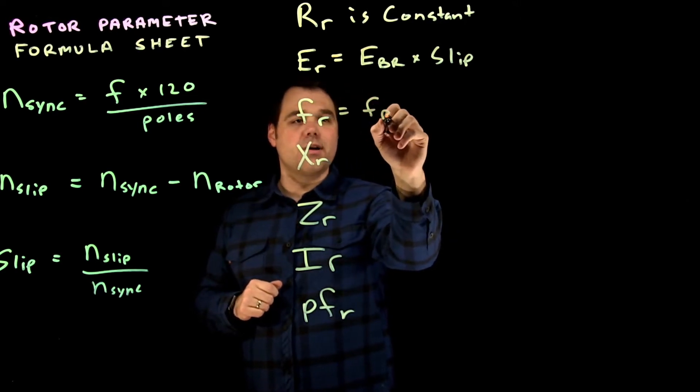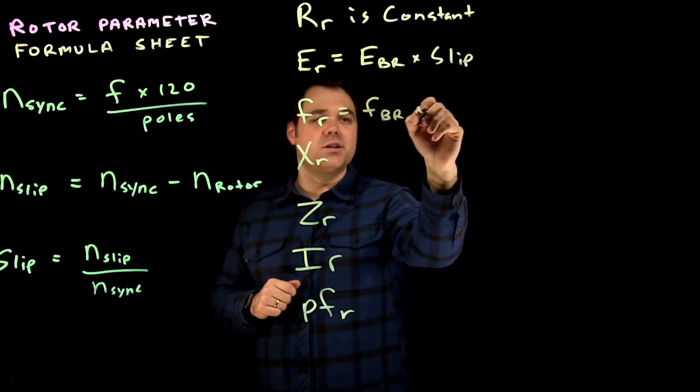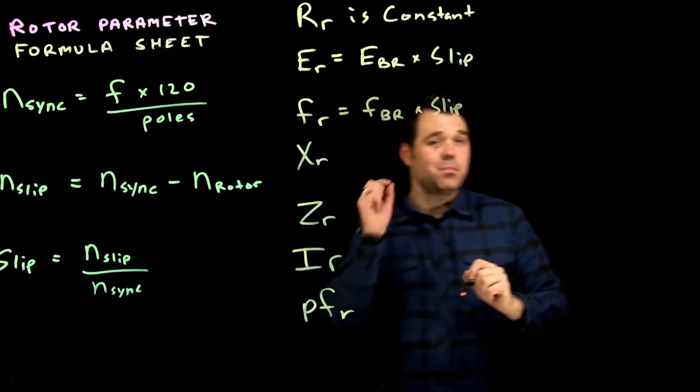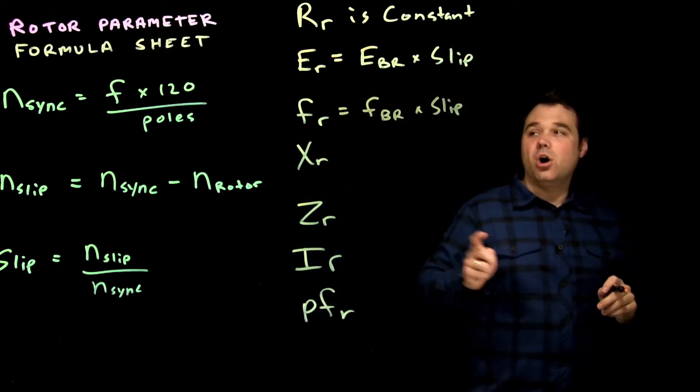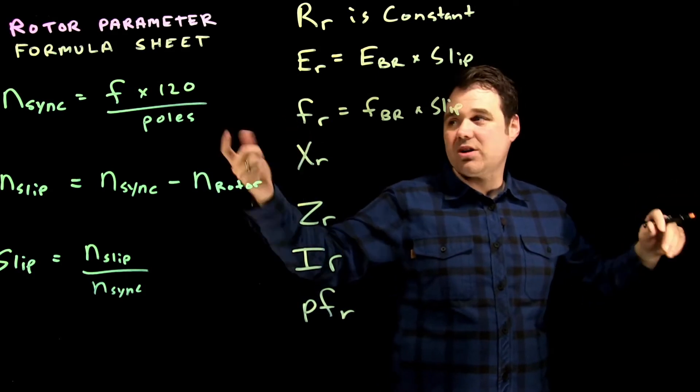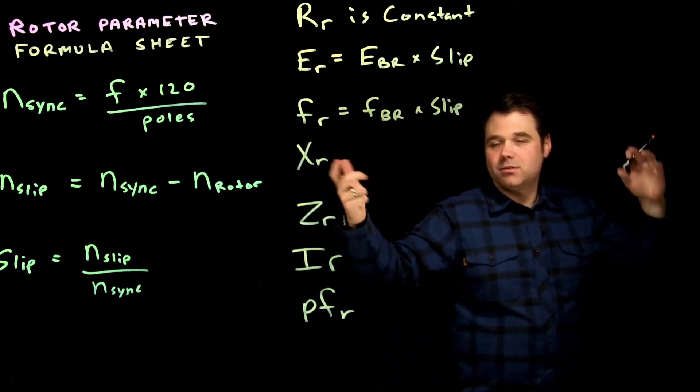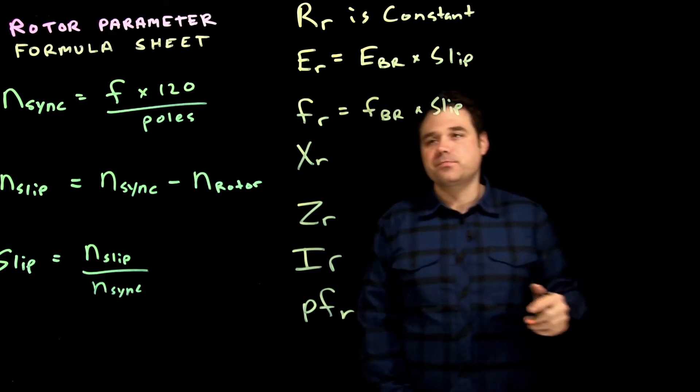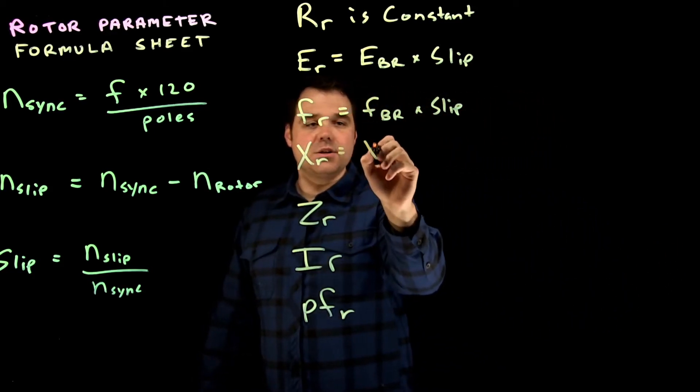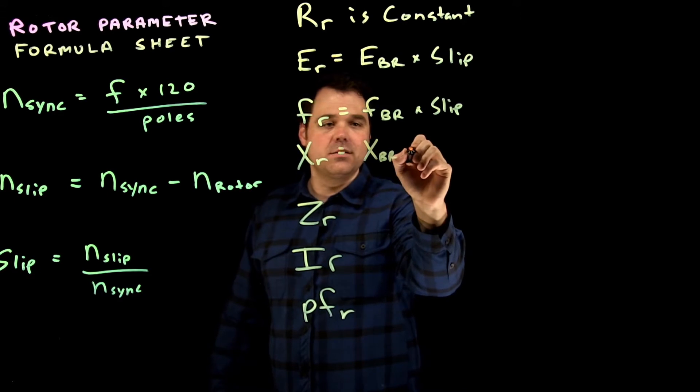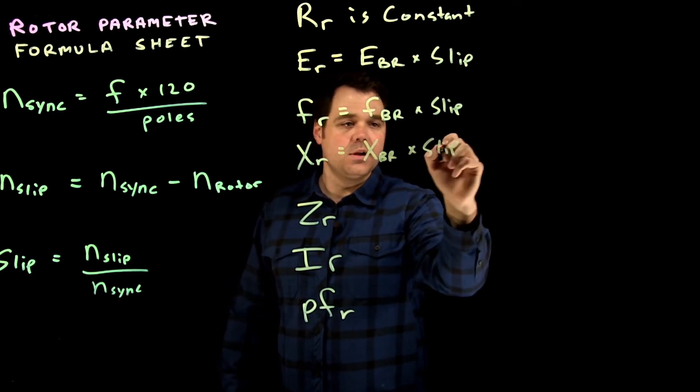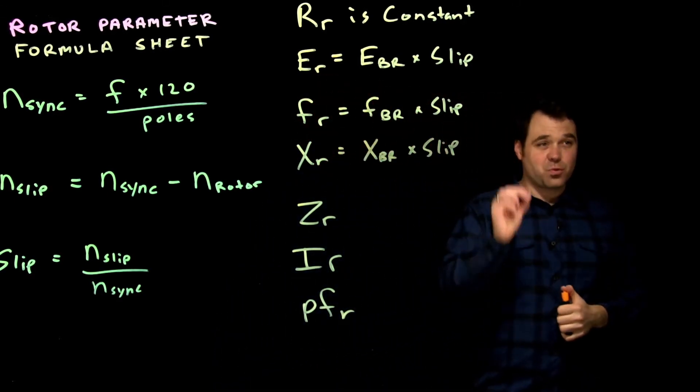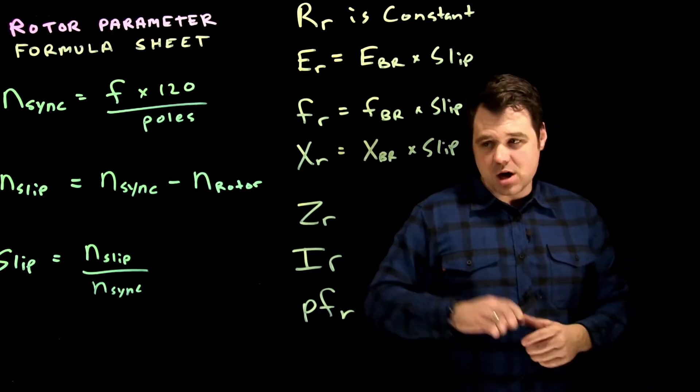Frequency - same thing, directly proportional. Blocked rotor frequency time slip. Blocked rotor frequency is always your source frequency, so here in North America 60 hertz, rest of the world, bunch of places, I don't know, 50 hertz somewhere else. Reactance is your blocked rotor reactance times slip. So the three of those are directly proportional.